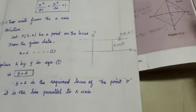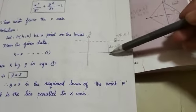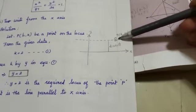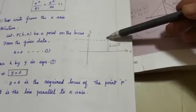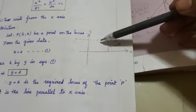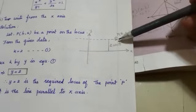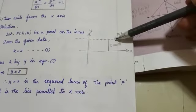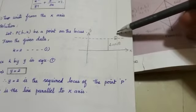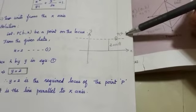By the given detail we know that P is a moving point. In the first sum it is 2 units from the x-axis. That means maybe it is in this way, here on this line, on this dotted line it may be anywhere. So that's why we are keeping one point and then we are considering this as moving point H, K.